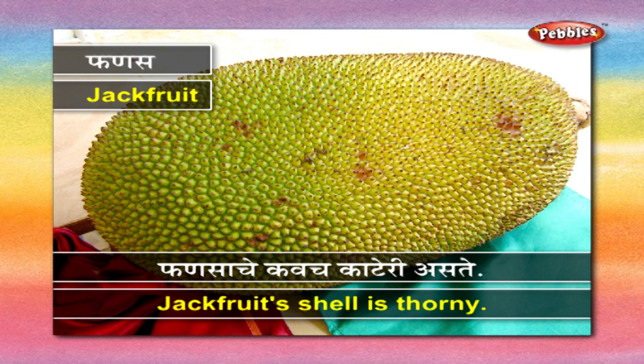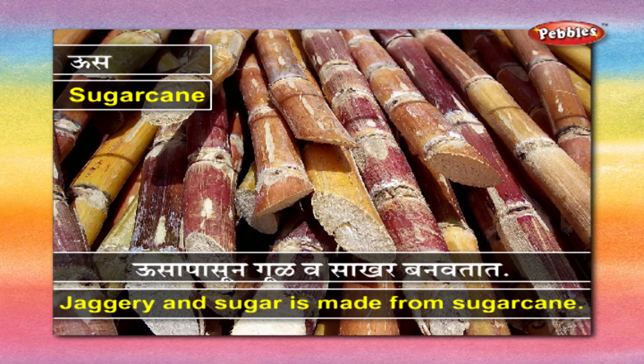फणस - फणसाचे कवच काटेरी असते. ऊस - उसापासून गूळ व साखर बनवतात.